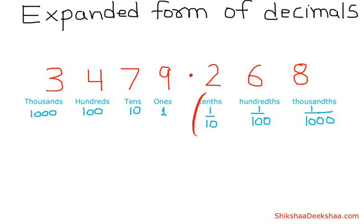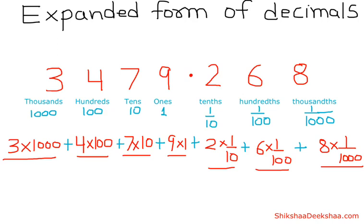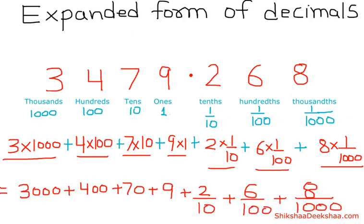So we can write the expanded form easily as 3 multiplied by 1000, plus 4 multiplied by 100, plus 7 multiplied by 10, plus 9 multiplied by 1, plus 2 multiplied by 1/10, plus 6 multiplied by 1/100, and 8 multiplied by 1/1000.